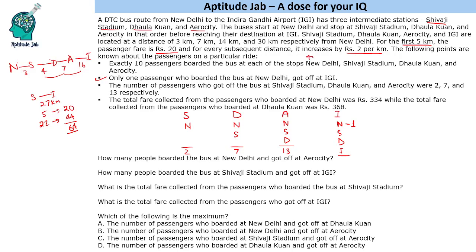There are 40 people who boarded the bus total. 2, 7, 13 got off at those stations, and we need to find the remaining values. The total at IGI will include 10 from Aero City since IGI is the last station, so all 10 will get down there. The total fare collected from passengers who boarded at New Delhi was ₹334, and from passengers who boarded at Dholakunha was ₹368. Let us say the unknown values are A and B.